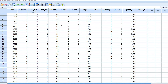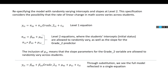Now let's try a model where we allow the slopes for grade_2 to randomly vary across individuals — essentially saying that the linear rate of change varies across individuals, and not everybody exhibits the same degree of change across years. We specify this by modifying our level 2 equation for the grade_2 slope to include both the fixed effect (the average slope across all individuals) plus a random component μ_1i, which captures the deviation of a given person's slope from the grand mean.